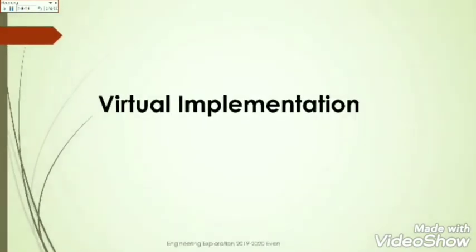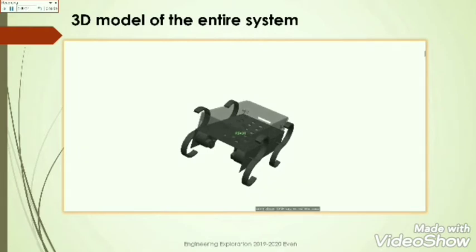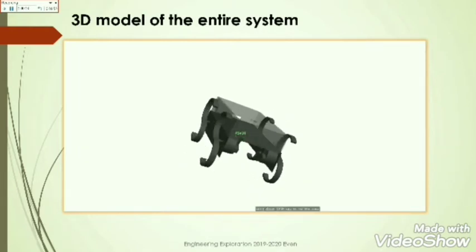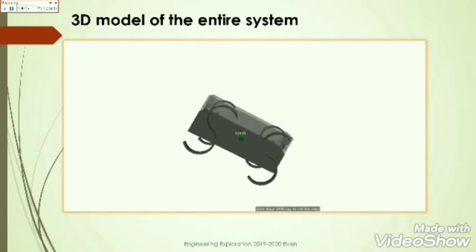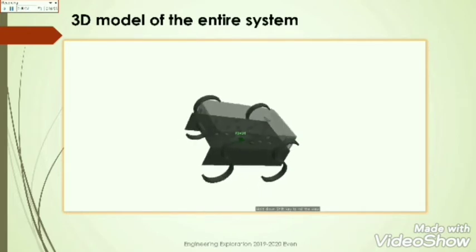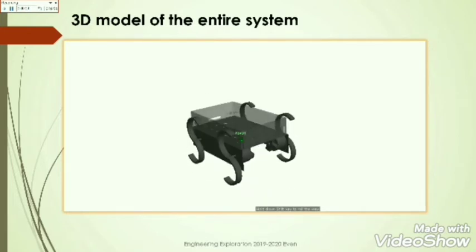Next is the phase of virtual implementation where we started to build our selected concept. This is the 3D model of the entire system, made up of 3 subsystems. The subsystems are locomotion unit, digging unit and sensing unit.